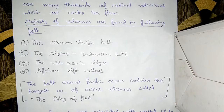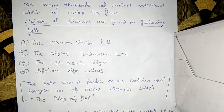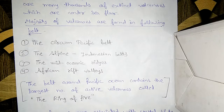There is one more important concept — the Ring of Fire. The belt around the Pacific Ocean that contains the largest number of active volcanoes is called the Ring of Fire. It is basically horseshoe-shaped, not actually a ring, but we call it the Ring of Fire.